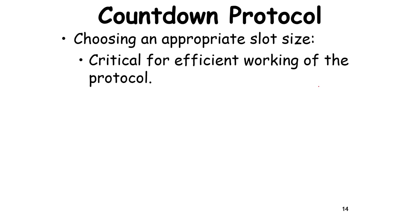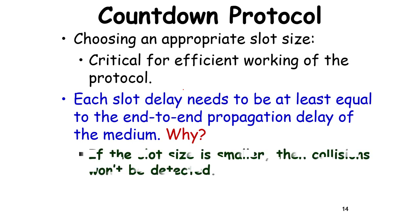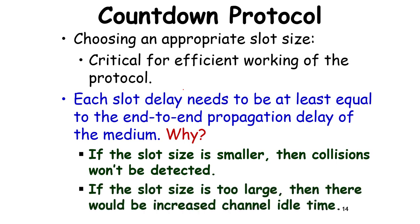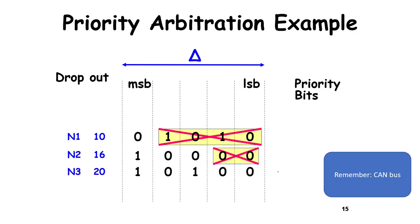The slot size is critical for efficient protocol operation. The slot size needs to be at least equal to the end-to-end propagation delay, so the message reaches the destination before someone else starts transmitting and causes a collision. If the slot size is very small, collisions will go undetected. If it's too large, there will be time wastage, analogous to internal fragmentation in memory.